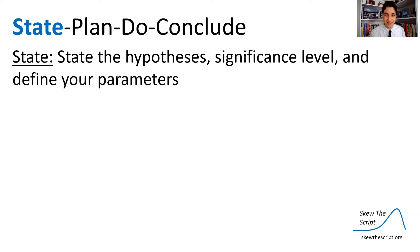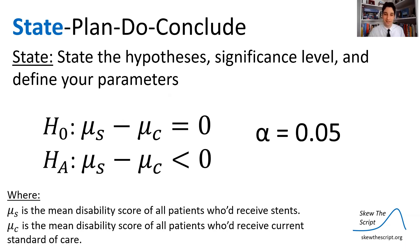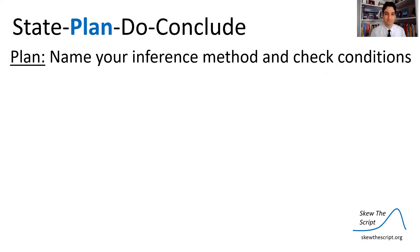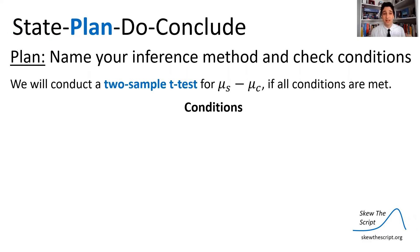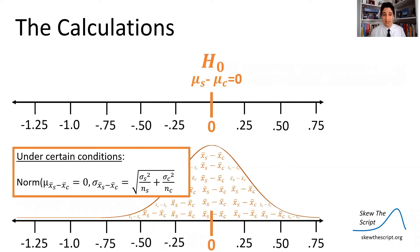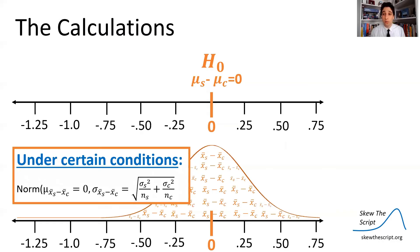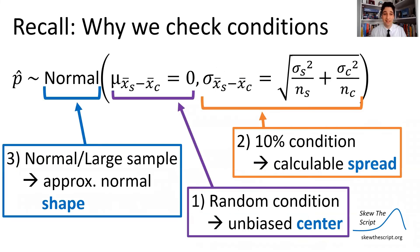Step one: state the hypotheses, significance level, and define your parameters. We set the significance level alpha to 0.05 by standard, then define the parameters. Step two: plan — name the inference method (this is a two-sample t-test) and check conditions. We check conditions because we used a normal curve approximated with a t-distribution, which only works under certain conditions. We check the random condition for unbiased center, the 10% condition for spread, and the normal/large samples condition.